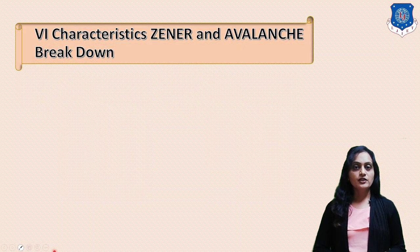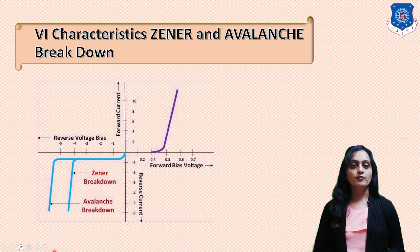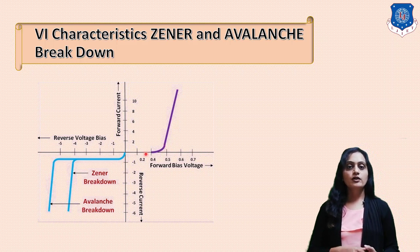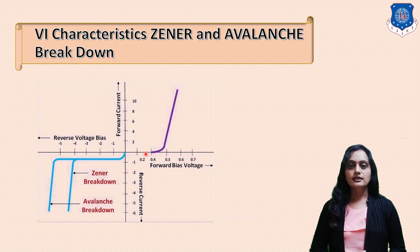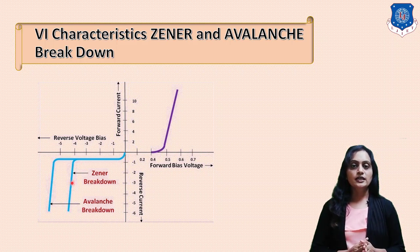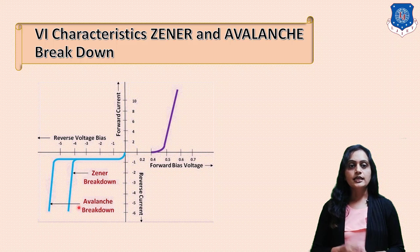Now we will see the VI characteristic for these two different breakdown phenomena. In the first quadrant, the forward characteristic is shown, which is the same as the PN junction diode. In the third quadrant, the reverse bias characteristic is plotted, showing the two different phenomena: for Zener breakdown the breakdown voltage is less, and for avalanche breakdown the breakdown voltage is higher.